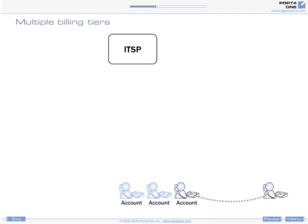Accounts are grouped under a customer. For instance, when a company buys 10 IP phones, every phone is represented by an account, and all of them will be placed under the same customer object, so that the company will receive a consolidated bill.